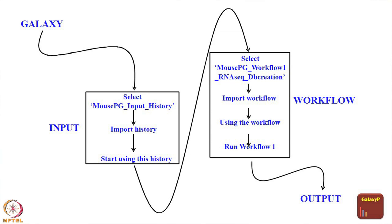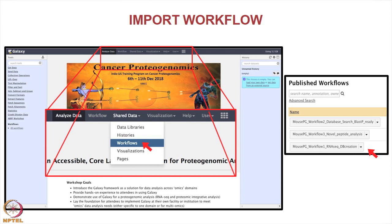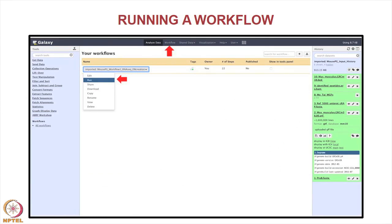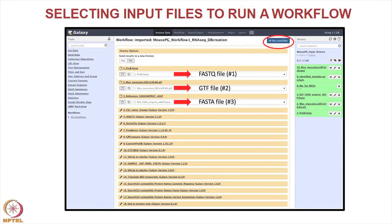We start with the five input files and then start using the first workflow, which is the database creation workflow. You go to workflows in Galaxy, download and import the workflow, and then run it. When you import the workflow it shows up in your list of workflows. It basically gives you three input files to select to run: the FASTQ file as the first input, the GTF file as the second, and the FASTA file as the third, and then there is a series of tools used so that you can convert them into a protein FASTA file eventually.